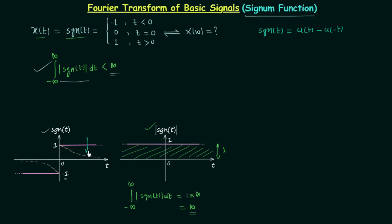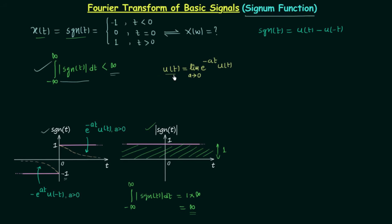For the converging waveform approach, we can write u(t) as the limit as a tends to 0 of e^(−at)·u(t). When a becomes 0, e^(−at) becomes 1, and 1 multiplied by u(t) gives u(t) itself. Similarly, u(−t) equals the limit as a tends to 0 of e^(at)·u(−t). When a tends to 0, e^(at) approaches 1, and multiplying by u(−t) gives u(−t).